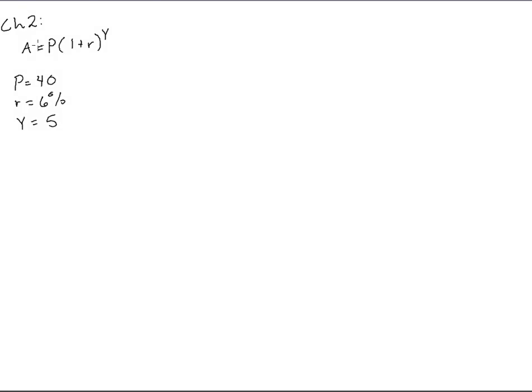Okay, back in Chapter 2, we had this interest formula that we used. So we start out, principal is $40, it has an interest rate of 6% for 5 years. And we stuck it into this formula and got the following.